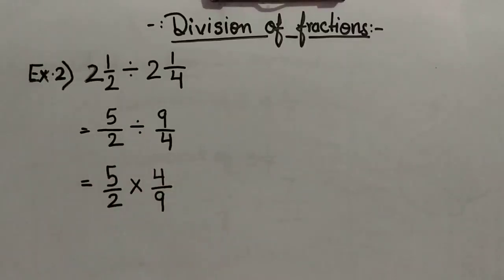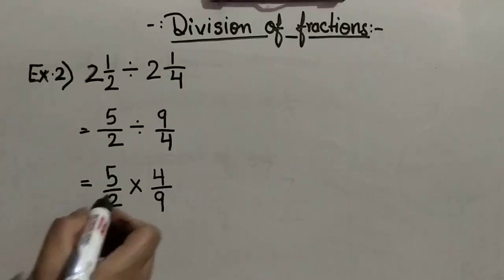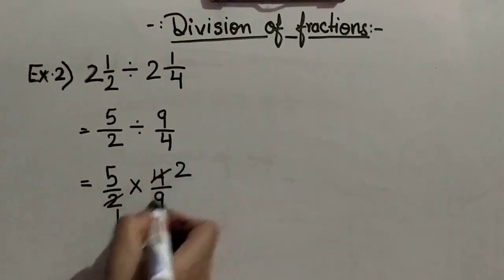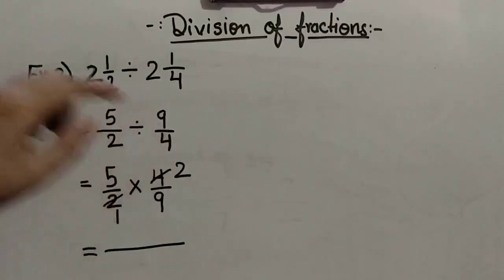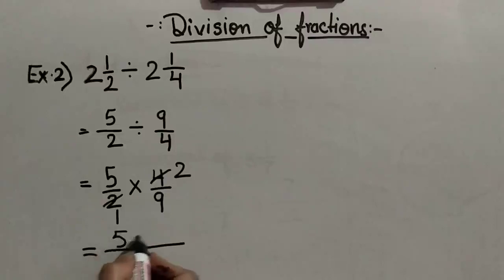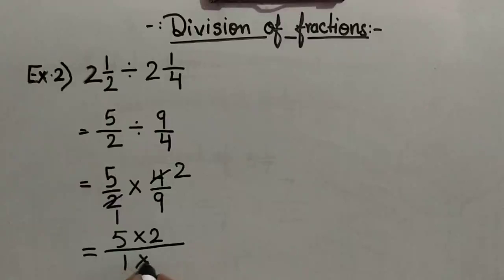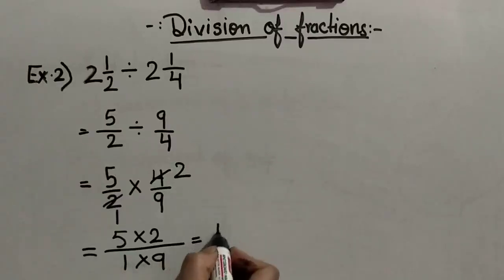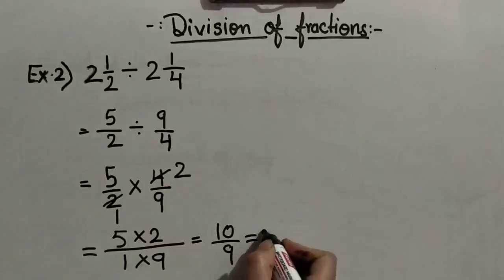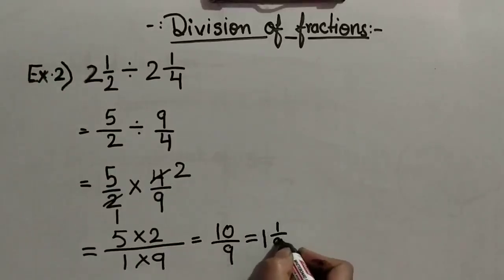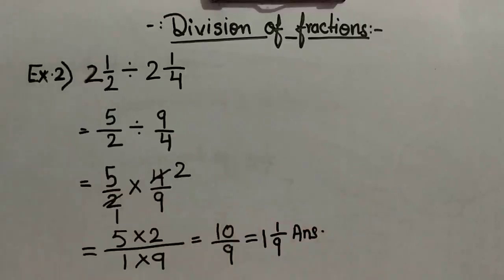Next step: simplify the fractions. 2 ones are 2, 2 twos are 4. Next step: multiply the fractions. 5 multiplied by 2 upon 1 multiplied by 9 gives 10 upon 9. Again our answer is in the form of an improper fraction, so we will change it into a mixed number. 9 ones are 9. So the answer is 1 whole 1 upon 9.